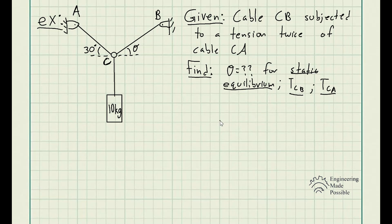The first step is to draw the free body diagram. We're dealing with the object of a 10-kilogram cylinder. A free body diagram is nothing more than redrawing the object and then drawing the forces instead of drawing the cables, ropes, or anything else attached to the system. In this way, we represent the object and forces only — that's what a free body diagram is.